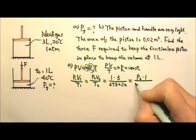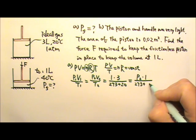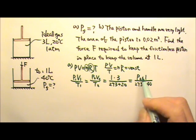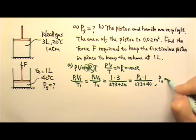And 40 degrees Celsius is 273 plus 40. Then we can cross multiply and we'll find P2 to be 3.2 atmospheres.